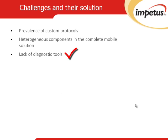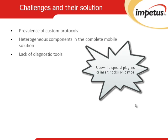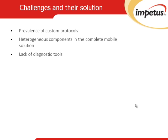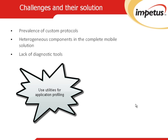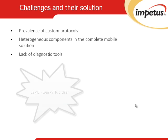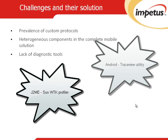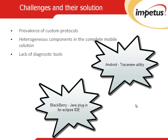The next challenge is lack of diagnostic tools. The server side can be load tested with appropriate tools, but there is always a challenge to see how the application is performing on the device. The variety of devices, platforms, and browsers brings complexity to client-side performance testing. Solution: we can use or write special plugins or insert hooks to gather data on how the application performs on the device. Each platform provides its own utilities for application profiling — for example, J2ME can use SunWTK profiler or YoKit, Android can use the TraceView utility, and for BlackBerry there is a Java plugin for Eclipse IDE.